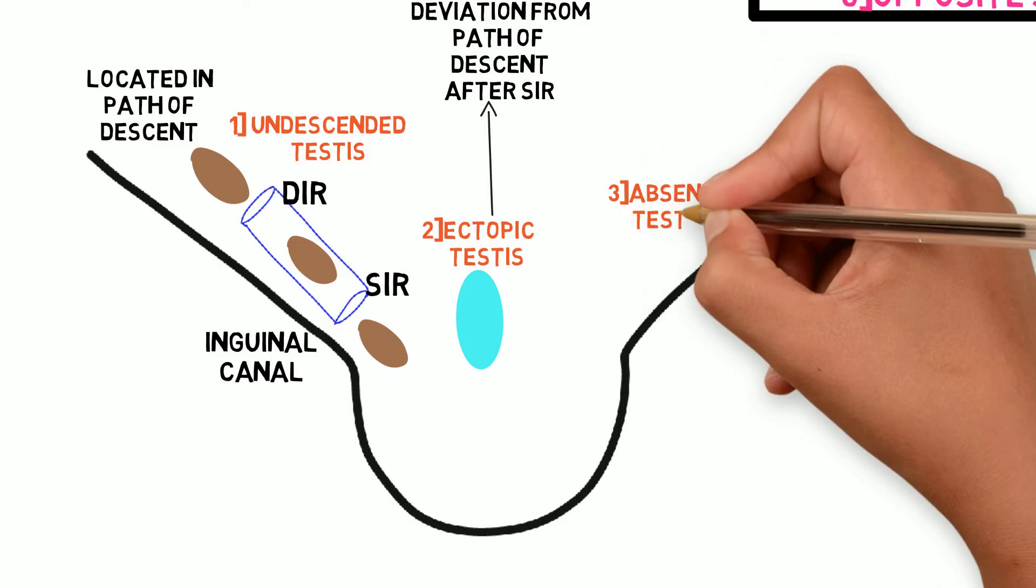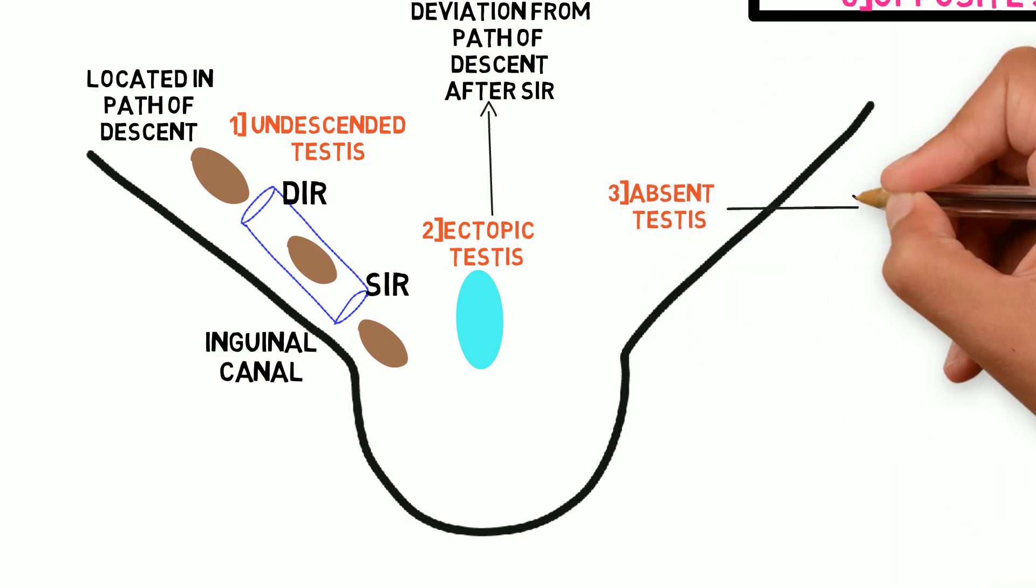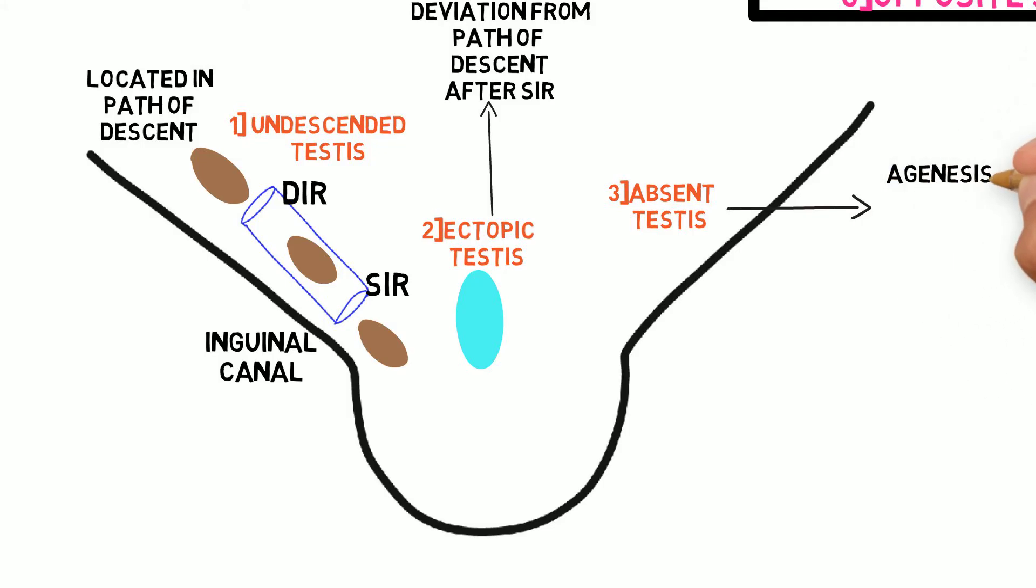Third cause is absent testis. It can be true unilateral agenesis or atrophic testis, also known as vanishing testis.